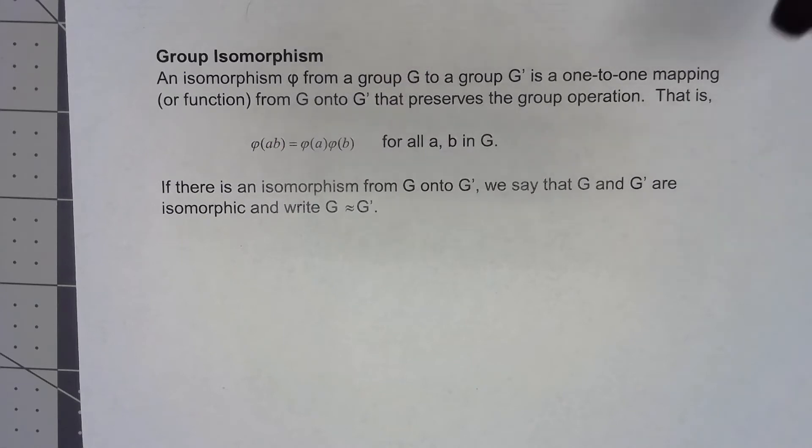I put out several words in that definition. First of all, this function has to be one-to-one and onto. We have to have a bijection from one group to the other, which means that the sets for G and G prime have to be the same size, either the same cardinality if it's an infinite set or the same finite number if it's a finite set.